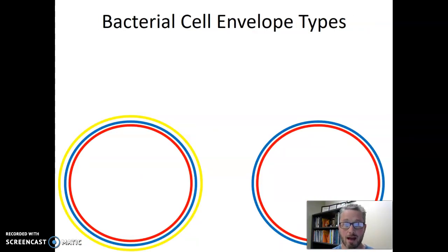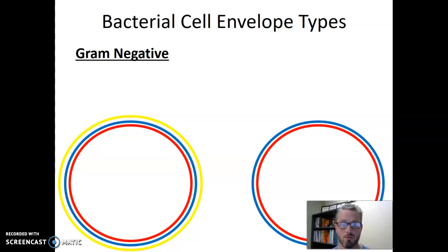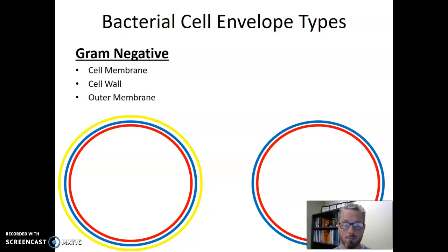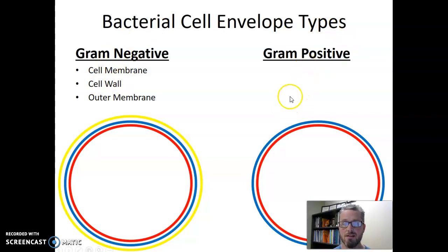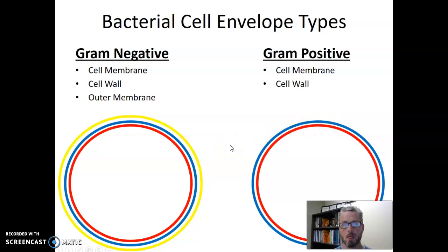Let's think more about the types of bacterial cell envelopes: gram-negatives and gram-positives. The gram-negative cell envelope has the red cell membrane on the inside, the blue peptidoglycan cell wall in the middle, and the yellow outer membrane on the outside. The space between the outer membrane and the cell membrane is the periplasm. Gram-positives, by contrast, don't have the outer membrane — just the inner red cell membrane and then the blue cell wall just outside of it, with the periplasm between the two. This is the first and most obvious difference: the presence or absence of the outer membrane.